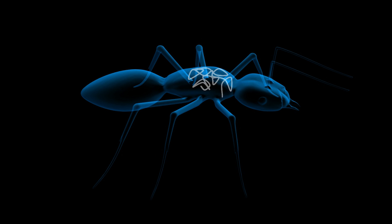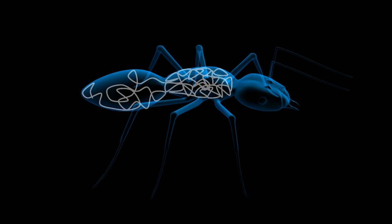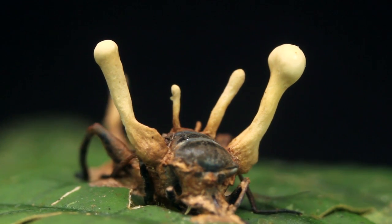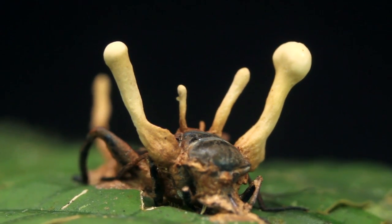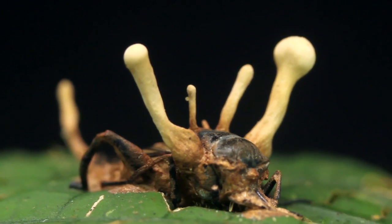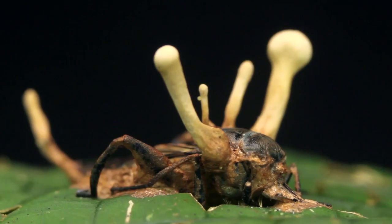The fungus then kills the ant as it begins to grow hyphae from within, forming a kind of branching network of fungus. It spreads throughout the ant's body, exoskeleton, and ultimately its brain. It also begins to secrete antimicrobials to ward off competition from other fungi and bacteria.